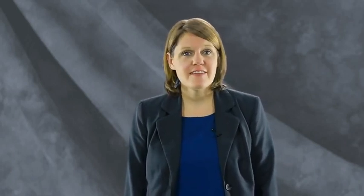The last graph is the line graph. Much like the bar graph, it also represents information on x and y axes using dependent and independent variables. Basic line graphs will have only two variables and often show change or progress as time goes by or in value.